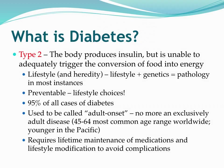We used to call this adult-onset diabetes, but we don't anymore because we're seeing an increasingly younger population with type 2 diabetes. The thing to help populations understand is that just like type 1 diabetes, you can't be cured of type 2. It requires lifetime maintenance of medications if necessary, as well as lifestyle modifications to avoid the complications of diabetes.